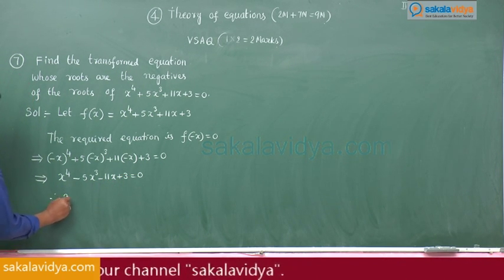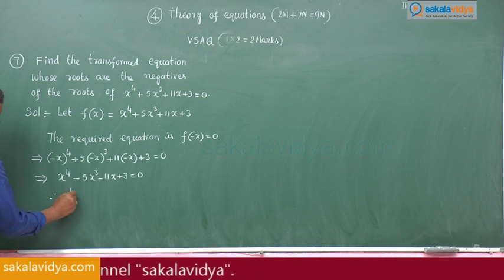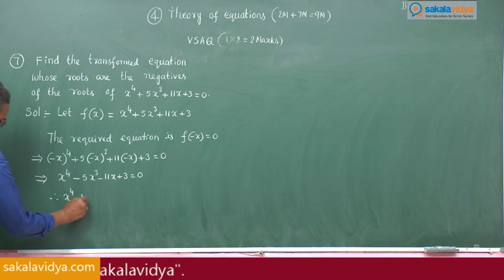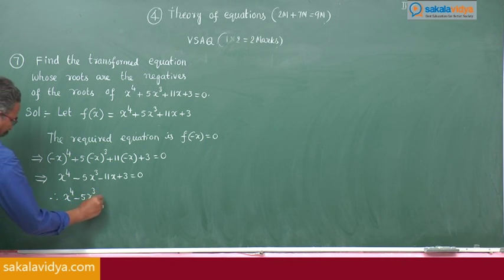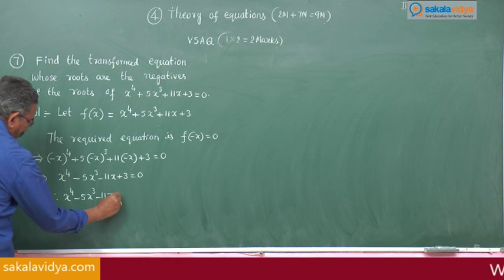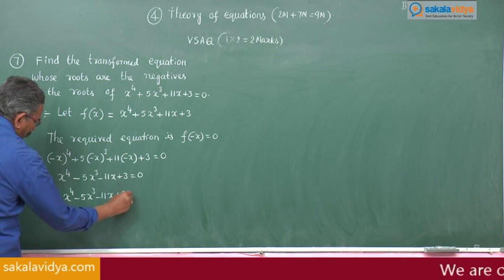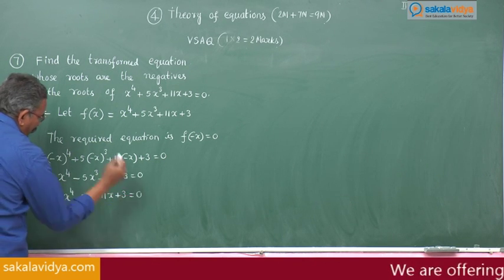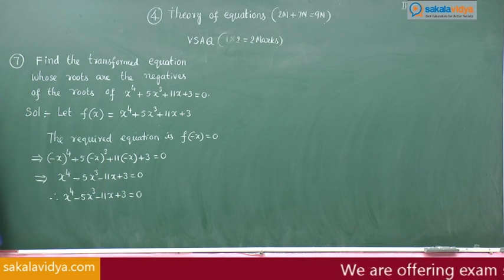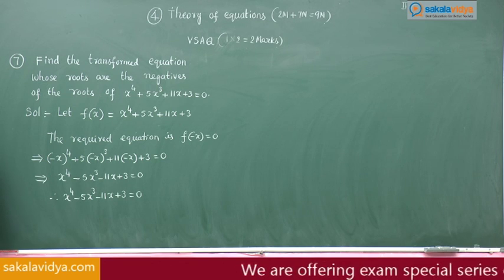Therefore, the transformed equation is x to the power of 4 minus 5x cubed minus 11x plus 3 is equal to 0. Now let us move to the next problem.